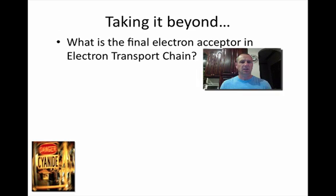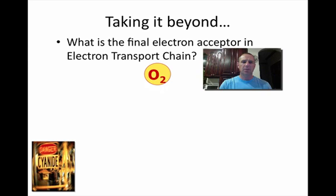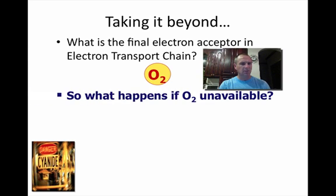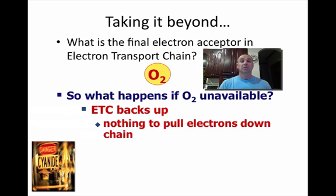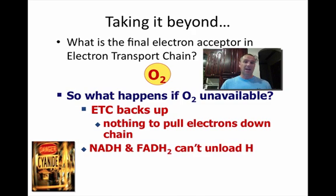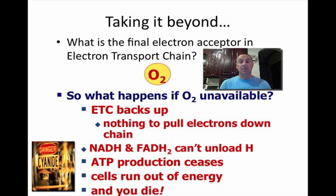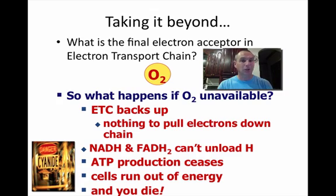What is the final electron acceptor in the electron transport chain? It is oxygen. So what happens if oxygen is not present? Bad things happen. The electron transport chain backs up — nothing is there to pull the electrons down the chain. The NADs and FADs can't unload their hydrogens. ATP production stops. Cells run out of energy. And if we're talking about you, you die. Not having oxygen is not a good thing.